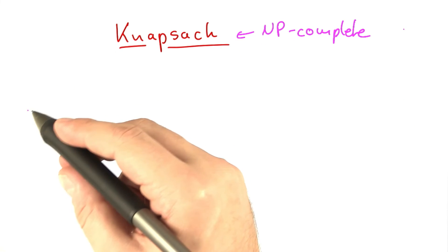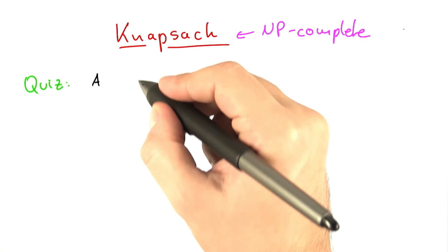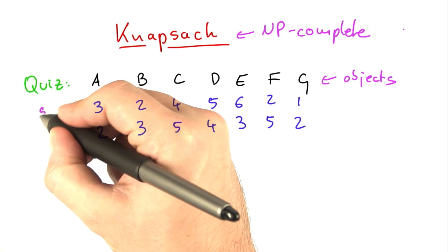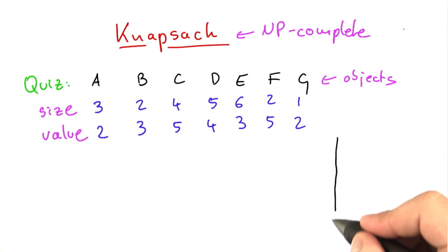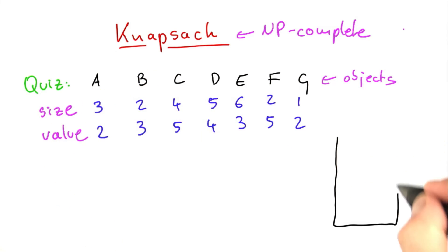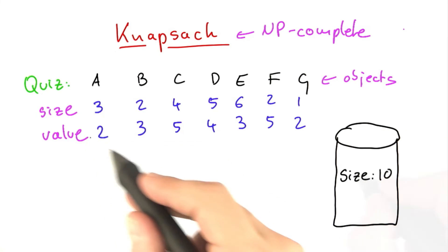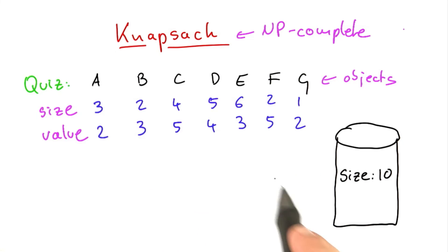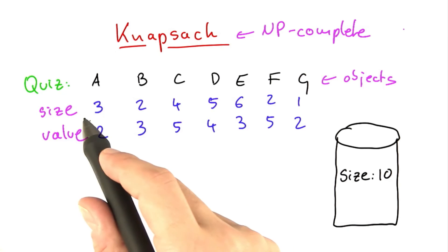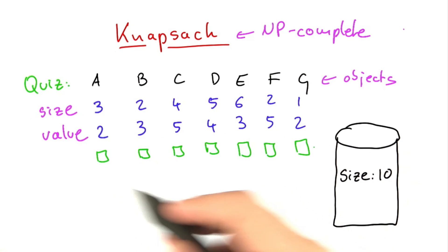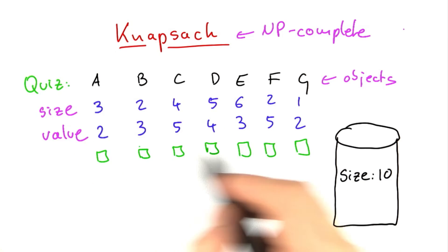Let's do a little example for this problem to familiarize yourself with it. I'm going to give you a number of objects, and each of these objects has a size and a value. The question is: if I give you a container with size 10, which objects out of these seven should you put into the container to maximize the value without exceeding the size? Please check all the items that you should put into the container to maximize the value.